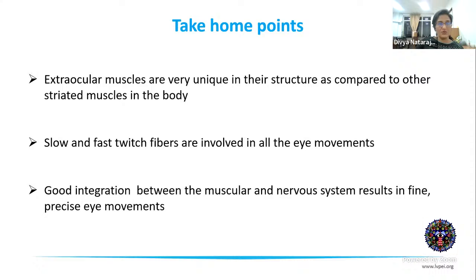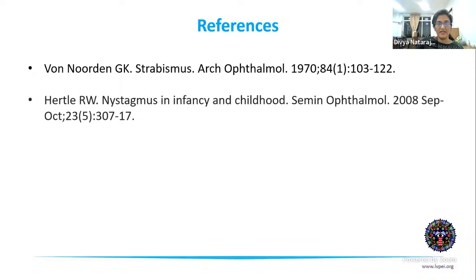Take-home points: extraocular muscles are very unique in structure and function compared to other striated muscles because both slow and fast twitch fibers are present in the same striated muscle. Key unique features include the very high nerve-to-muscle ratio, strong integration between muscle and nervous system, and the characteristic peripheral orbital and central global layers — all of which underlie the precise eye movements that extraocular muscles are responsible for.